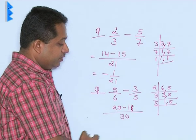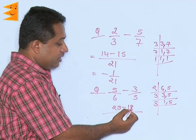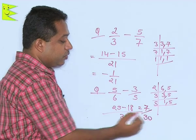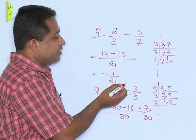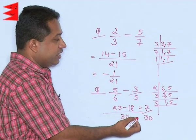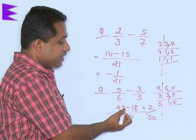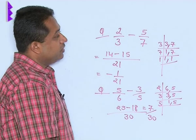So, this becomes 18. So, we have 25 minus 18 and therefore, we can say the final answer will be 7 upon 30. So, just like addition, the procedure for subtraction is same. Only in addition, the symbol between the numbers is plus but in subtraction, it will be minus.